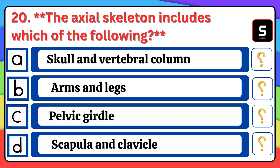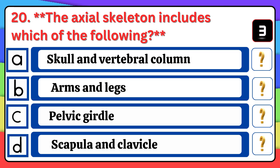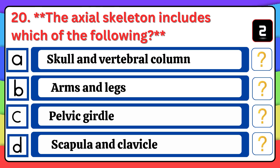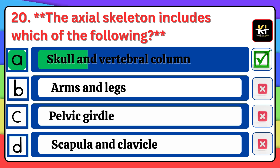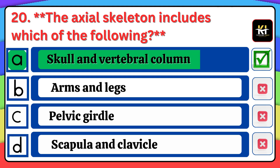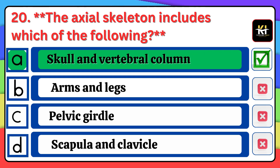Question number twenty: The axial skeleton includes which of the following? Correct answer: Skull and vertebral column.